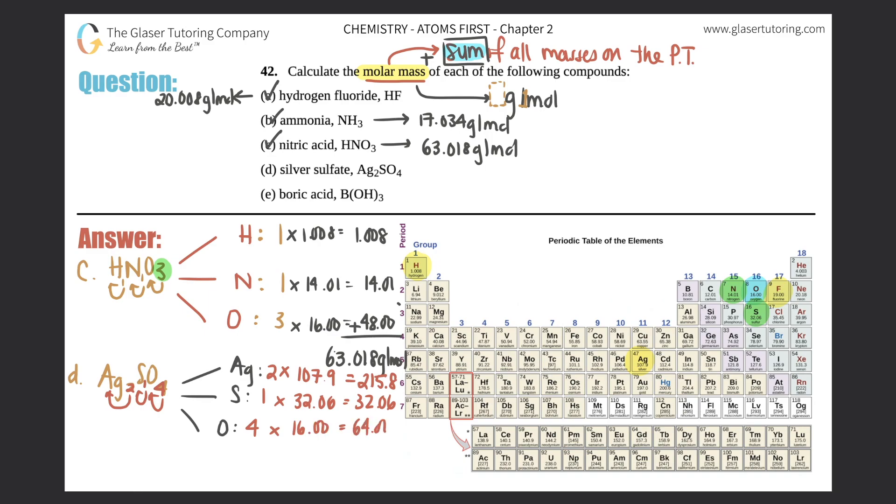Oxygen we found out from before which was 16, so four times 16 is 64. And sum them up - you got to add them all up. So 215.8 plus 32.06 plus 64, you get 311.86 grams per mole. So that's the answer to d, 311.86 grams per mole.